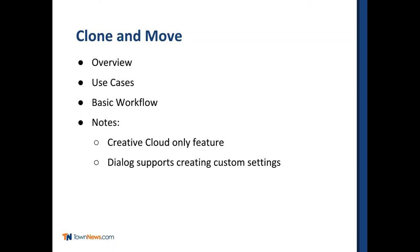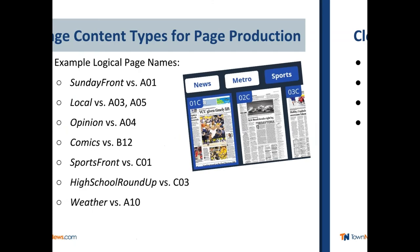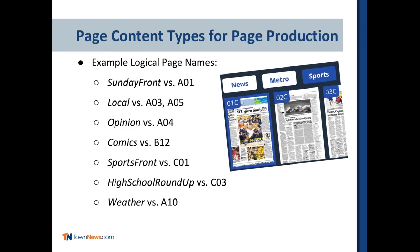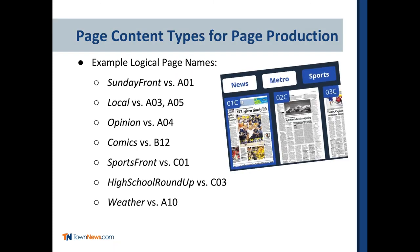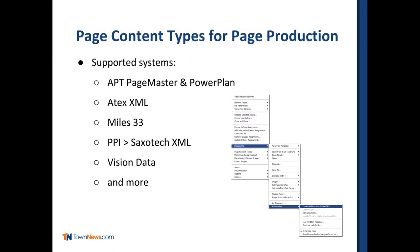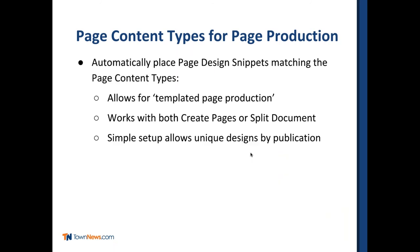Returning to page content types: these provide logical page names — the advertising system knows these things and marks pages accordingly, including in the live edition. It's currently supported by certain ad systems using 'create edition from edition file,' and there are page content type menu options available. This enables templated page production — nine of those ten pages were all set up automatically. Works whether using create pages or split document.